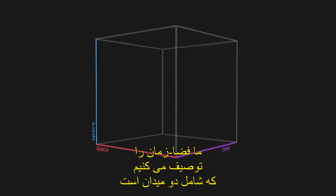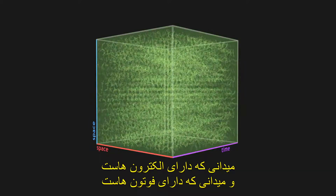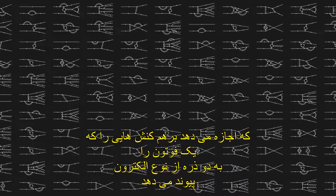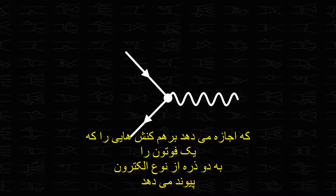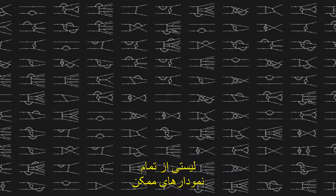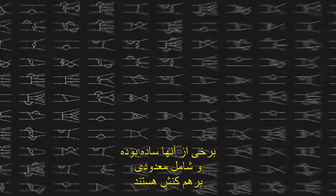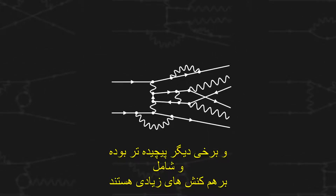Let's summarise what we have so far. We describe a space-time which contains two fields — that of electrons and that of photons. From an initial situation with two electrons, we are interested in all possible evolutions, allowing interactions that link a photon to two particles of the electron type. From this, we can create a catalogue — a list of all the possible diagrams; there are infinitely many. Some are simple, contain few interactions, and others are more complex, involving many interactions.